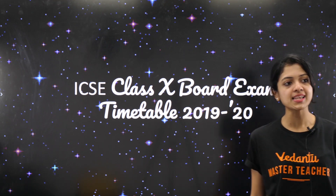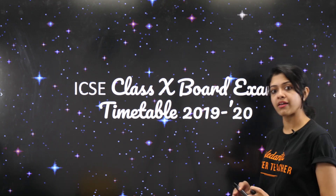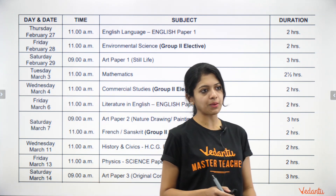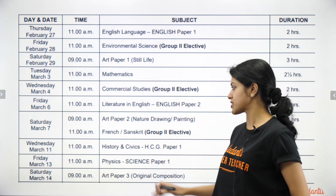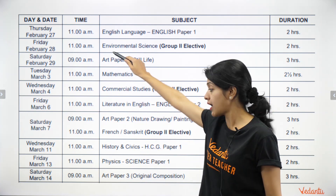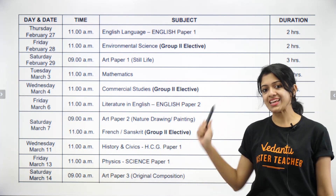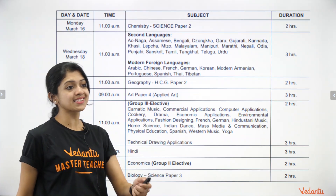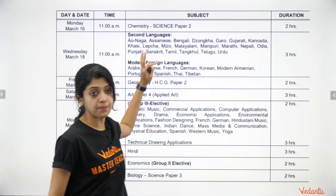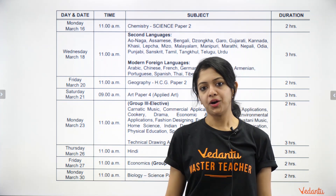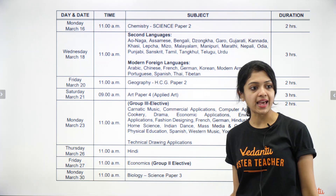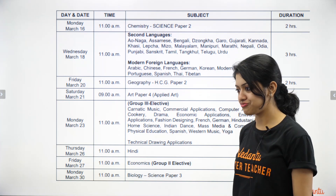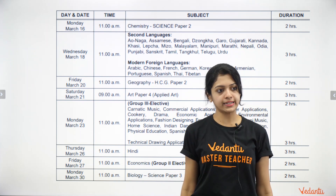The first thing we need to know is the actual ICSE Class 10 board exam timetable 2019-20. I took this from the official ICSE website and divided it into two parts. The first half is from February 27th till March 14th. The second half is from March 16th until March 30th. As you can see, your biology — Science Paper 3 — is going to be your very last exam on March 30th.